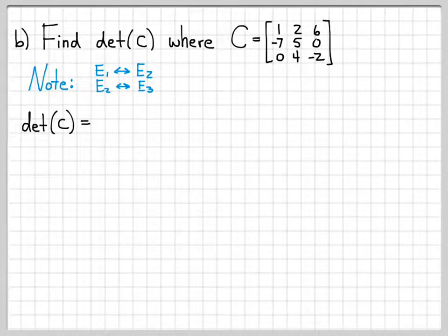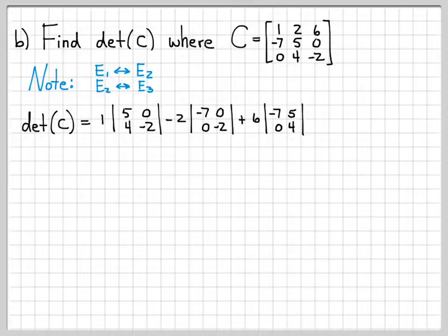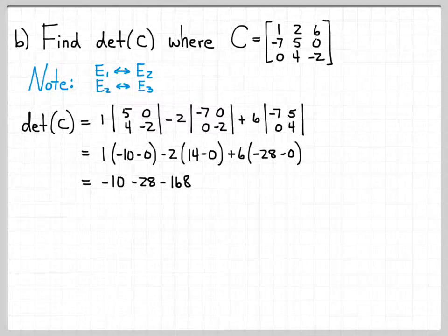Let's go ahead and compute the determinant of C just using the definition of the determinant. I'll do cofactor expansion about the first row again. That gives me 1 times the determinant of this submatrix, minus 2 times the determinant of this submatrix, plus 6 times the determinant of this submatrix. That works out to 1 times negative 10 minus 0, minus 2 times 14 minus 0, plus 6 times negative 28 minus 0, which simplifies to negative 10 minus 28 minus 168, giving us negative 206.